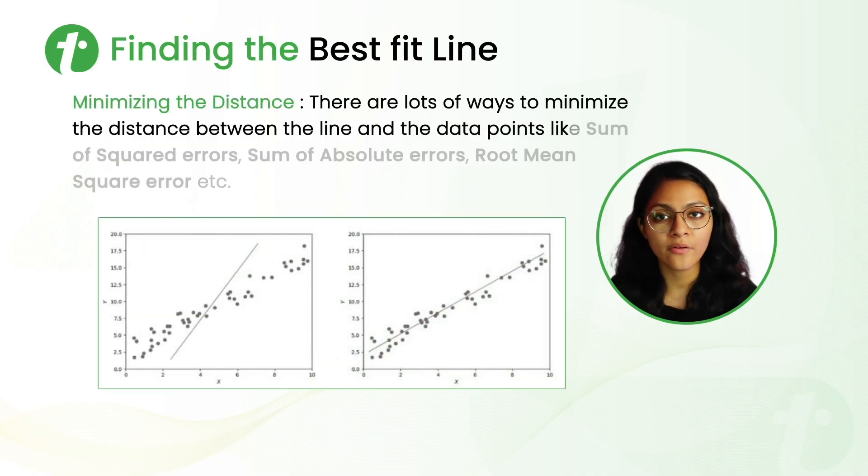We check this value for each line and conclude the best fit line having the least E square value. For minimizing the distance between the actual value of Y and predicted value of Y, there are lots of ways like sum of squared errors, sum of absolute errors, root mean squared errors, etc.